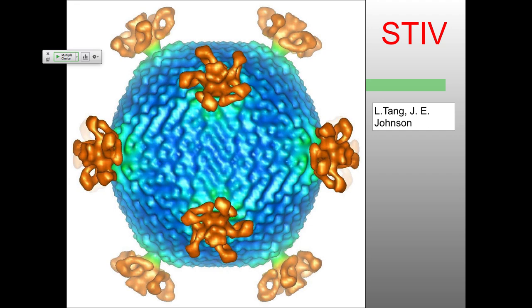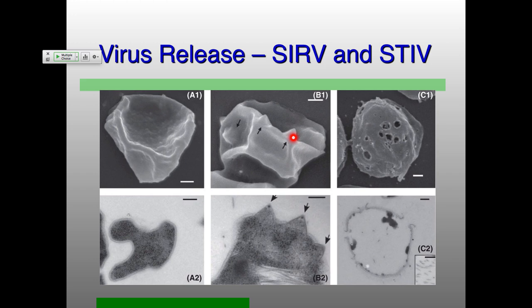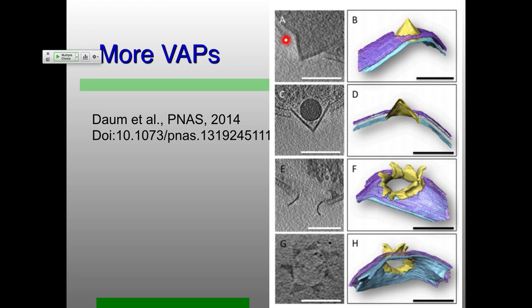They were looking at Sulfolobus infected by STIV particles and saw these really weird pyramidal-like projections coming off infected cells. Normal cells on one side, infected cells with these pyramids on the other — and after virions are released, you end up with these holes in the surface of the cell. This was seen with STIV, and then almost simultaneously SIRV — the long rod-shaped viruses — showed exactly the same thing. We've done some electron tomography looking in more detail at each of these virion-associated pyramids.